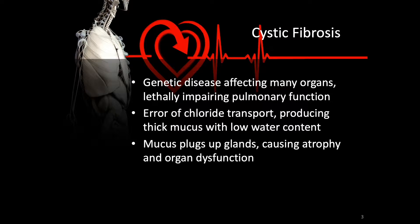This causes atrophy and organ dysfunction. Non-pulmonary problems include pancreatic insufficiency, malnutrition, intestinal obstruction, poor growth, male sterility, and cirrhosis of the liver. Other problems associated with CF in young adults include osteoporosis and diabetes mellitus. However, you should know that respiratory failure is the main cause of death.